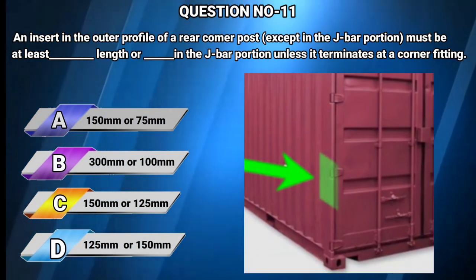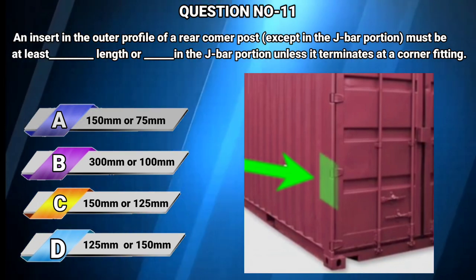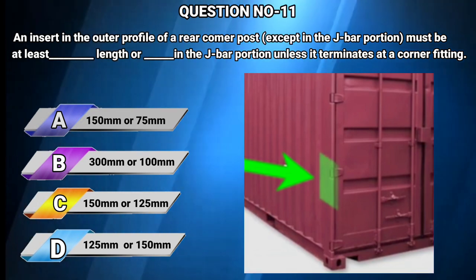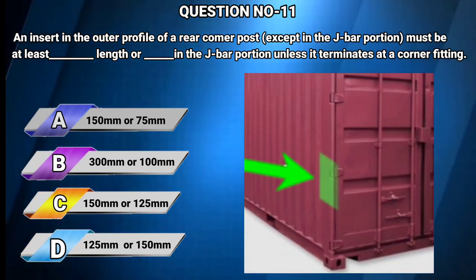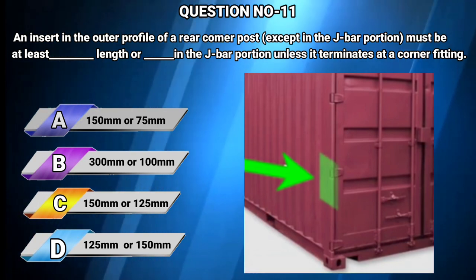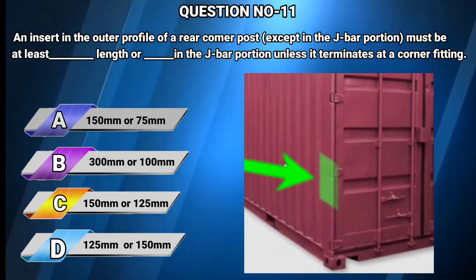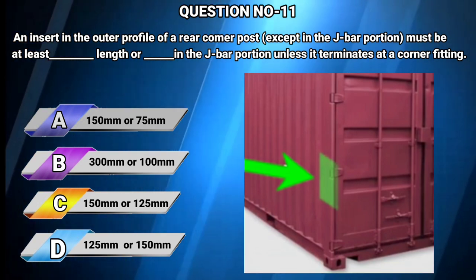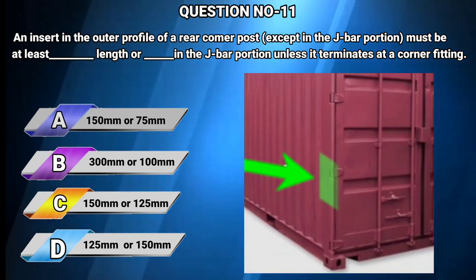Question number 11: An insert in the outer profile of a rear corner post, except in the J-bar portion, must be at least — in length, or — in the J-bar portion, unless it terminates at a corner fitting. Options: A) 150 mm or 75 mm, B) 300 mm or 100 mm, C) 150 mm or 125 mm, D) 125 mm or 115 mm. The answer is A: 150 mm or 75 mm.